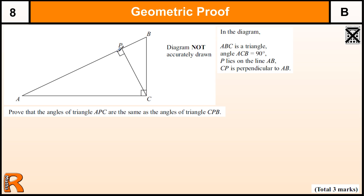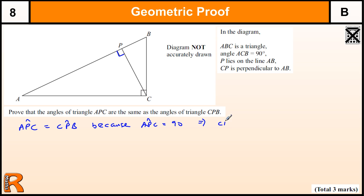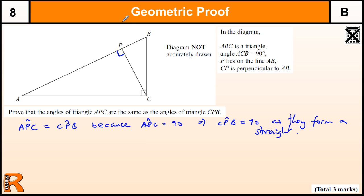First of all, we need to show that angle APC equals angle CPB. Because angle APC equals 90, which implies CPB equals 90, as they form a straight line. We've got to state it, because they're on a straight line — if this is 90, this has to be 90, because the straight line is 180.